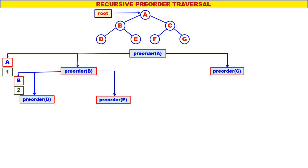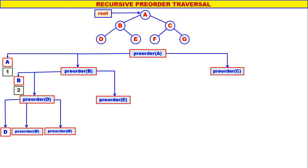Now let us come to pre-order of D. D is not equal to null, therefore display D. Left of D is null, therefore pre-order of null. Right of D is null, therefore pre-order of null. D is the third one to be displayed. When root is null, nothing happens.